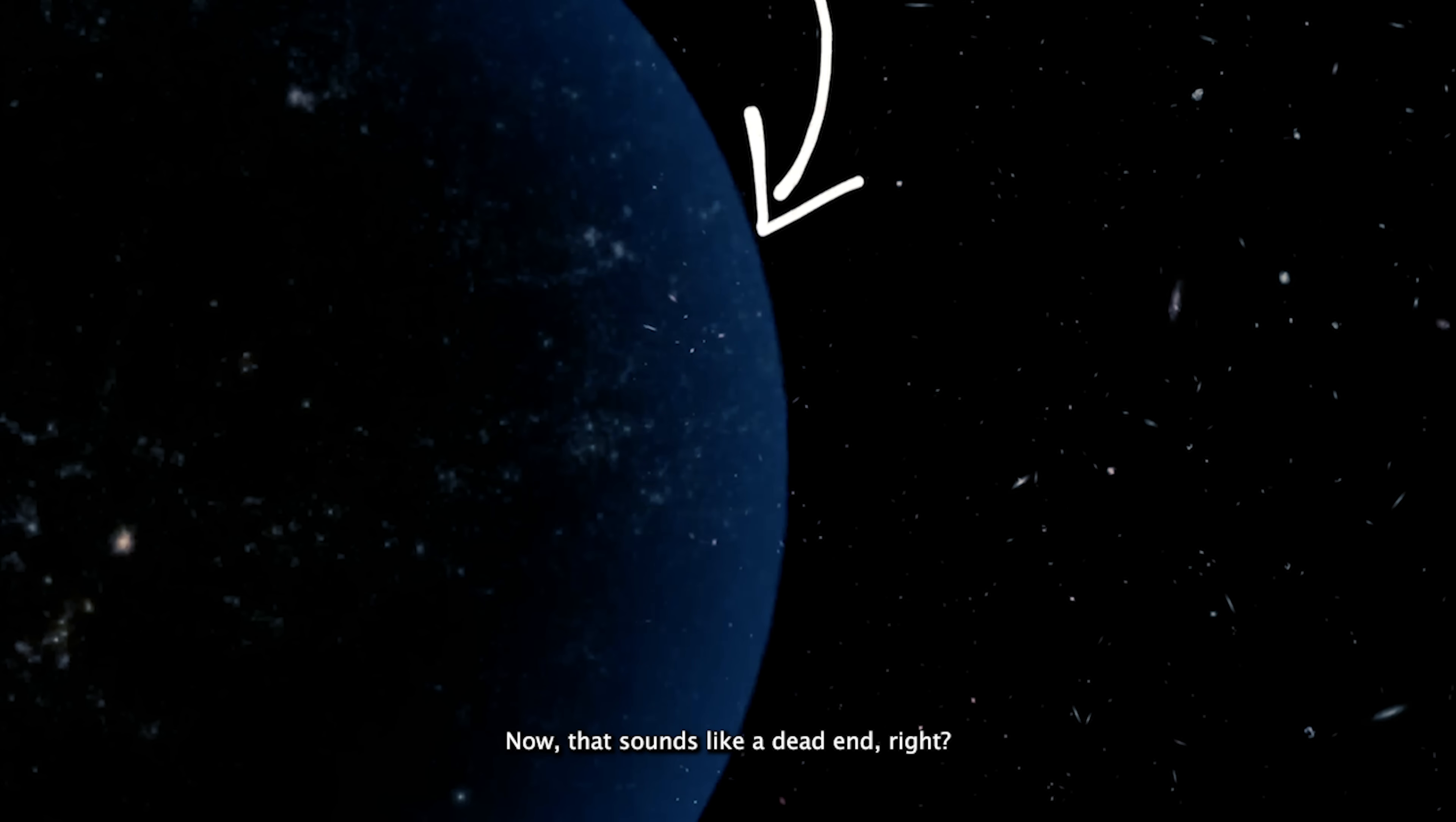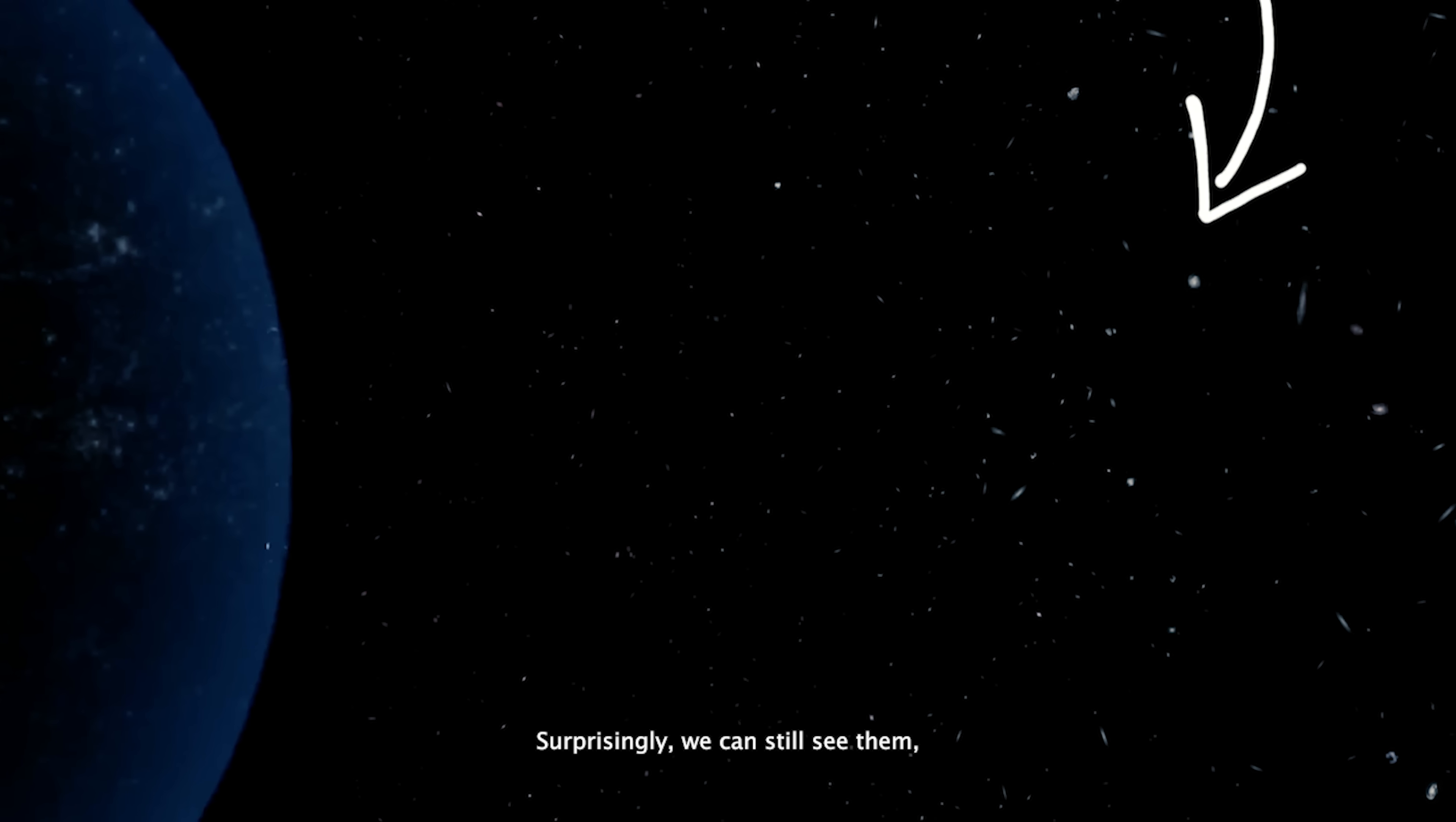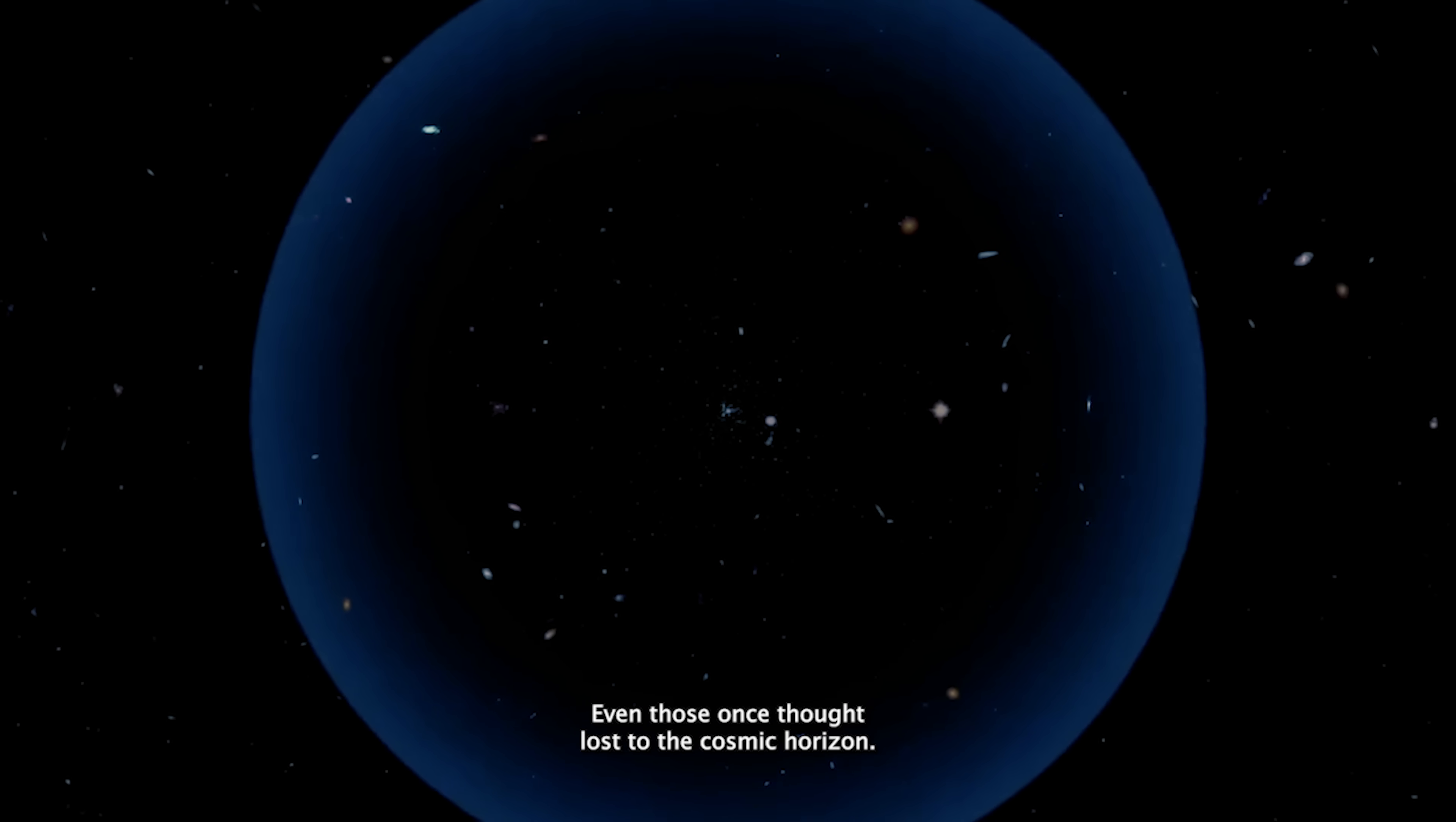That sounds like a dead end, right? Common sense says we should never see light from these galaxies. If they're moving away faster than light, how could their light ever catch up to us? Surprisingly, we can still see them. Thanks to the accelerating expansion of space, the Hubble sphere itself is growing. As it expands, it pulls more distant galaxies into our line of sight, even those once thought lost to the cosmic horizon.